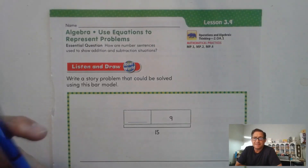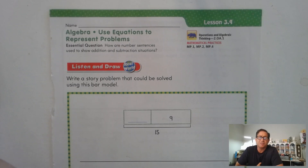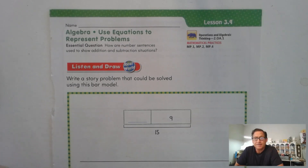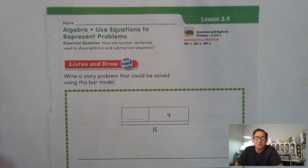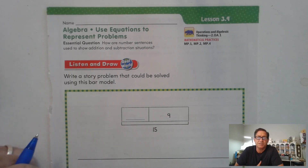Hello, everybody. In today's lesson, Lesson 3.9, Using Equations to Represent Problems, we're on page 153 of the Second Grade Gold Math textbook, and our essential question is: how are number sentences used to show addition and subtraction situations?